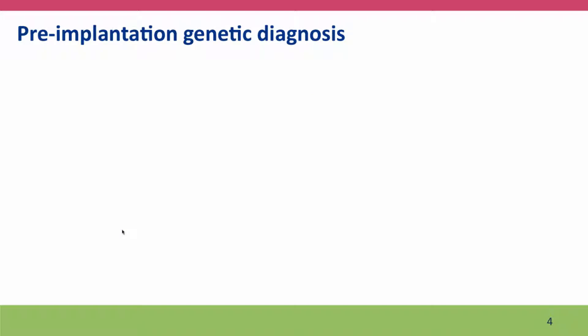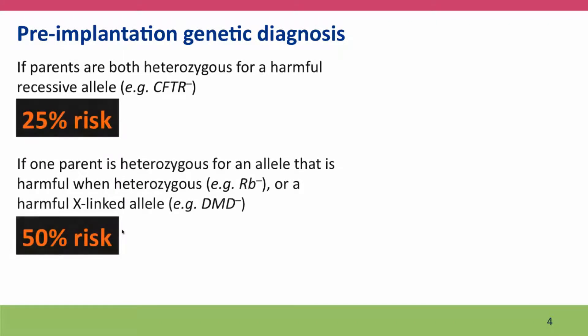Next I want to introduce a technique called pre-implantation genetic diagnosis. This is of enormous value to parents who wish to become parents but carry a mutation causing a serious genetic disease. We can consider two cases, both of which will become clearer after modules 7 and 8 when we discuss the mechanisms of inheritance. If both parents are heterozygous for the same harmful recessive allele — for example, the CFTR allele — even though they are both healthy, they have a 25% risk of a homozygous child.